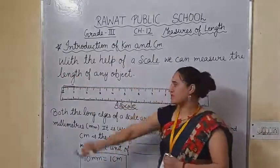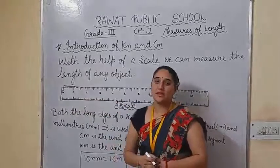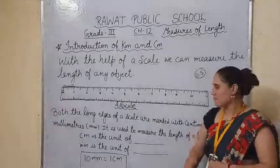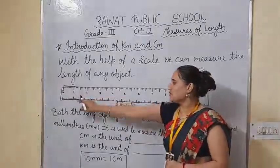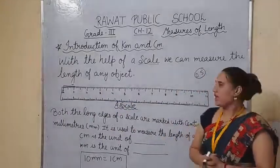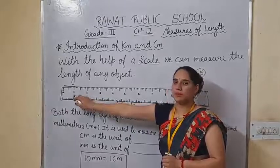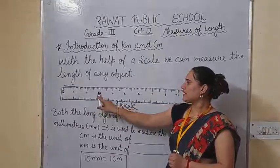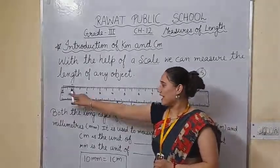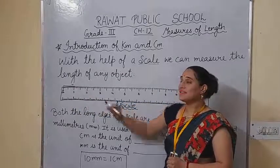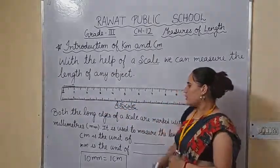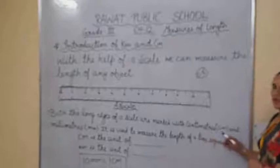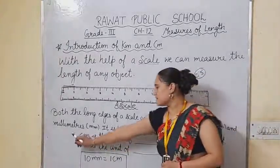But in the middle you can see one more big line. What does it mean? It means 0.5. This is MM, which means millimeter. So between 0 to 1 there are total 10 lines, and after that you can see another 10 lines, and you get the number 2. Another 10 lines, you get number 3. So the lines you can see inside the numbers are called millimeters. Both the long edges of a scale are marked with centimeters, called CM, and millimeters, called MM.